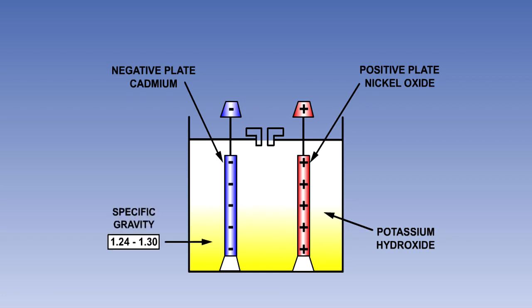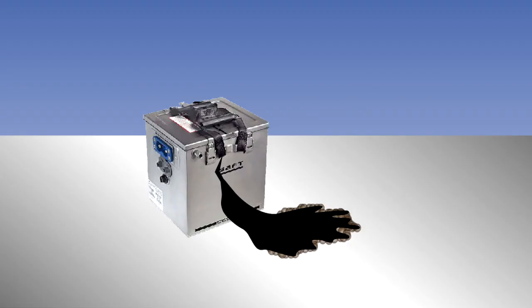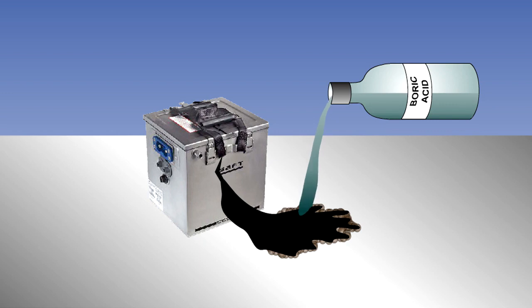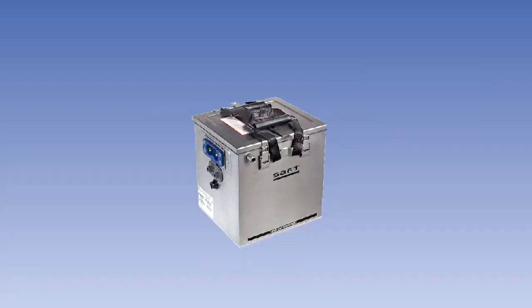The specific gravity of the electrolyte is in the range of 1.24 to 1.30. Again, the electrolyte can be highly corrosive. The neutralizing agent to be used in case of a spillage is boric acid. However, the cells are all enclosed in a sealed metal container, so the risk of a spillage is very small.